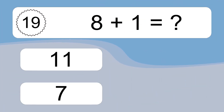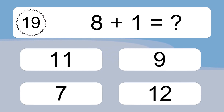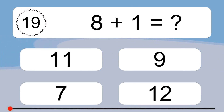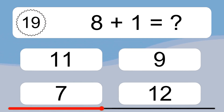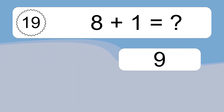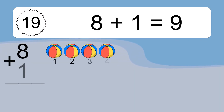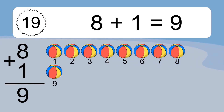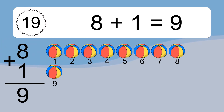8 plus 1 equals what? 8 plus 1 equals 9. Let's count it: 1, 2, 3, 4, 5, 6, 7, 8, 9.